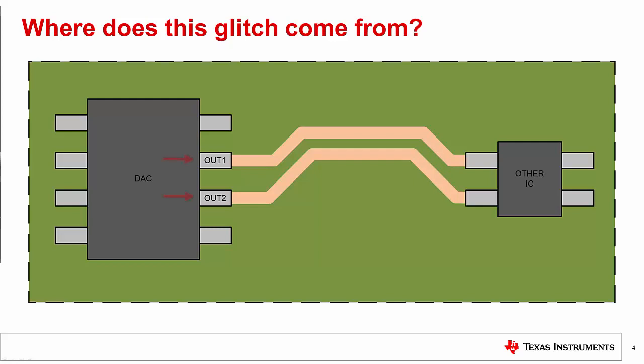Consider this example layout. We see that we have two DAC outputs, out1 and out2, that are routed next to each other to an adjacent IC. Ideally, this layout is fine, but if you consider that all physical systems have parasitic resistance and capacitance, we can find a few problems.